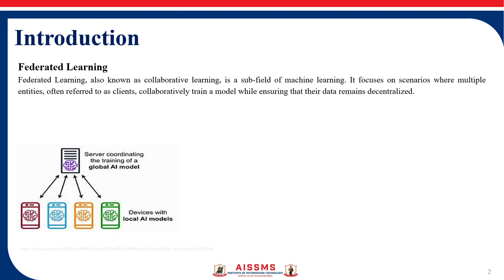The general principle of federated learning involves training local models on local data samples and exchanging parameters — such as weights and biases of a deep neural network — between local nodes at some frequency, to generate a global model shared by all nodes.